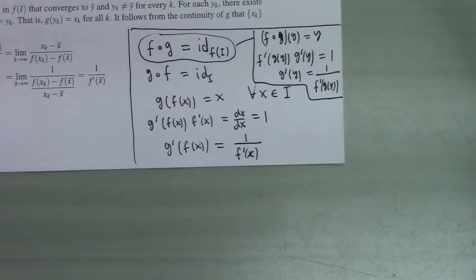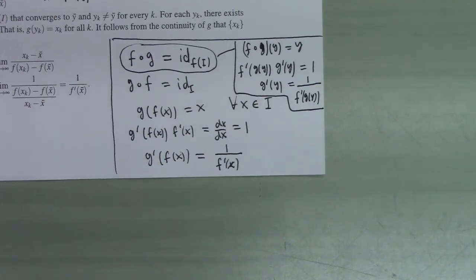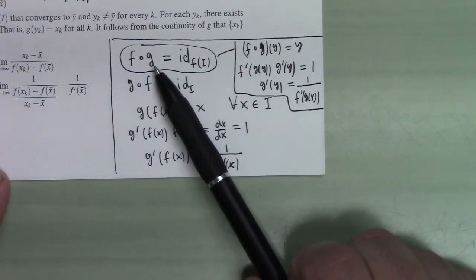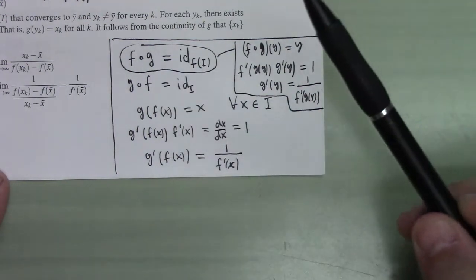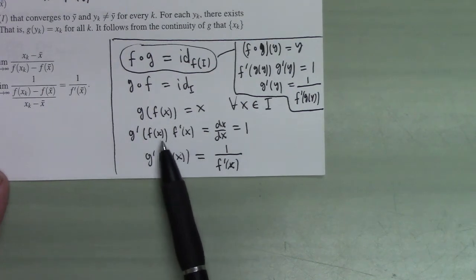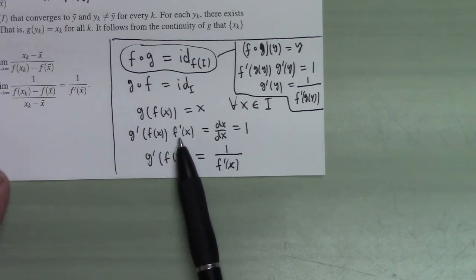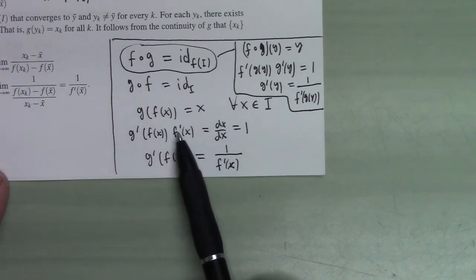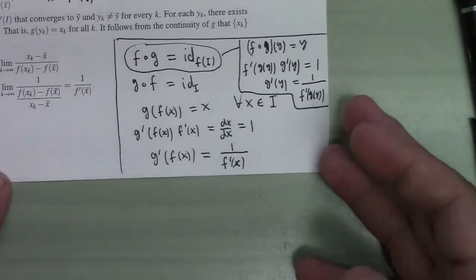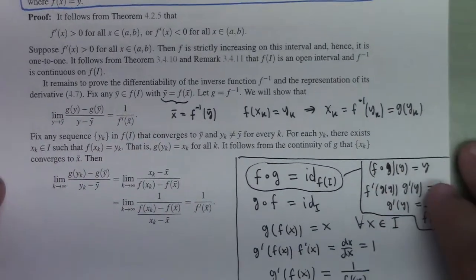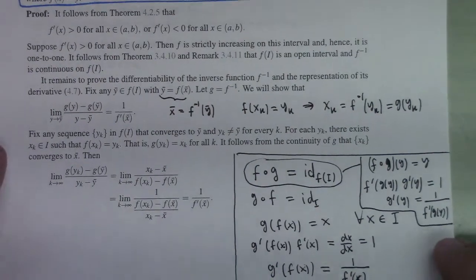Worth pointing out: if a function is invertible and increasing, then its inverse is also increasing; if decreasing, the inverse is also decreasing. This must be so because the product of the derivatives of f and its inverse equals 1, meaning they share the same sign — either both positive or both negative. This is important to know when computing derivatives of inverse sine and cosine in Calculus 1.